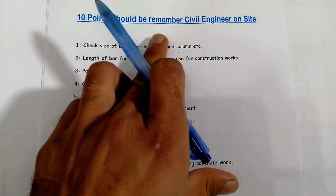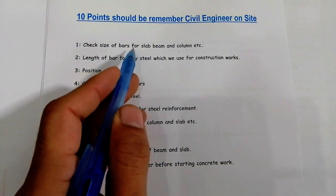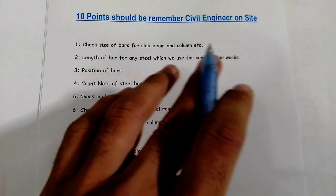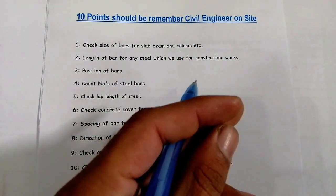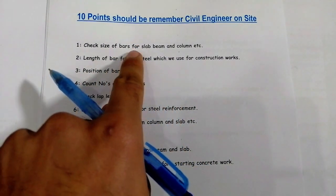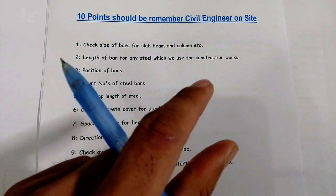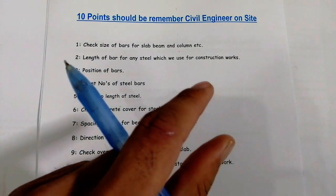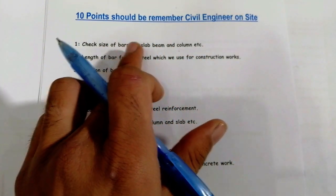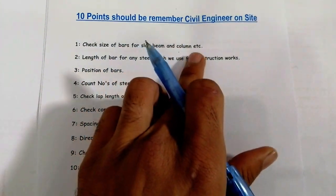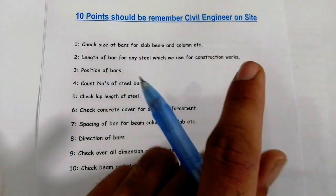The first point is: check the size of bar for slab, beam, and column. If you are working on a construction site, you will check the size of bar in slab, column, and beam. The diameter of the steel bar should be checked with the help of a Vernier caliper. Check whether the diameter of the steel bar is according to drawing or not — for slab, beam, and column.